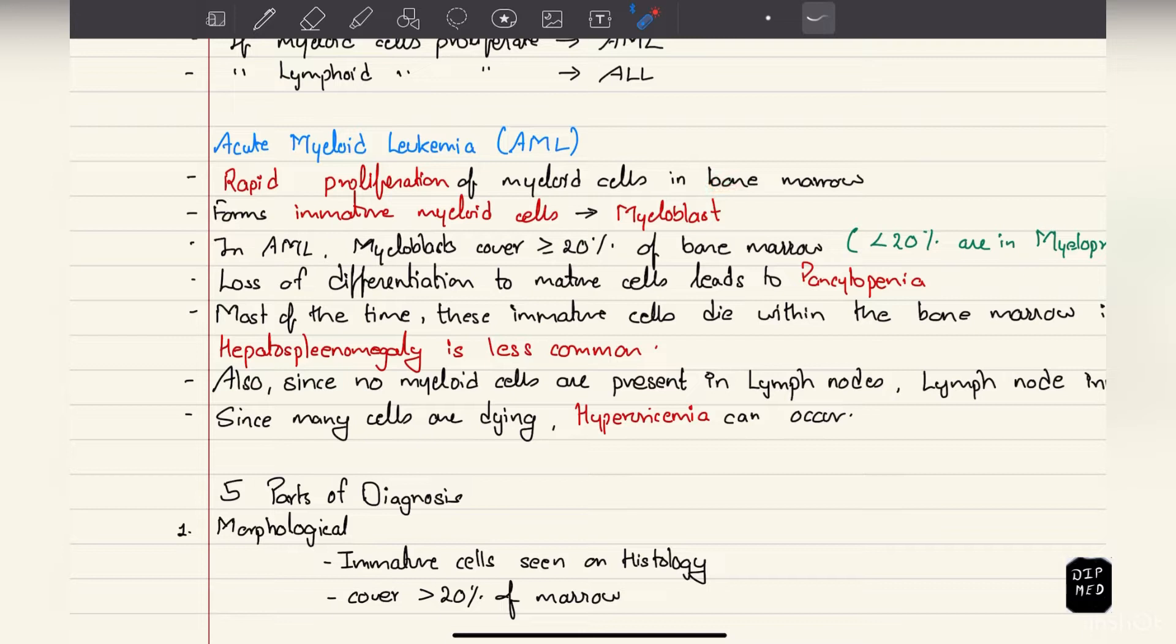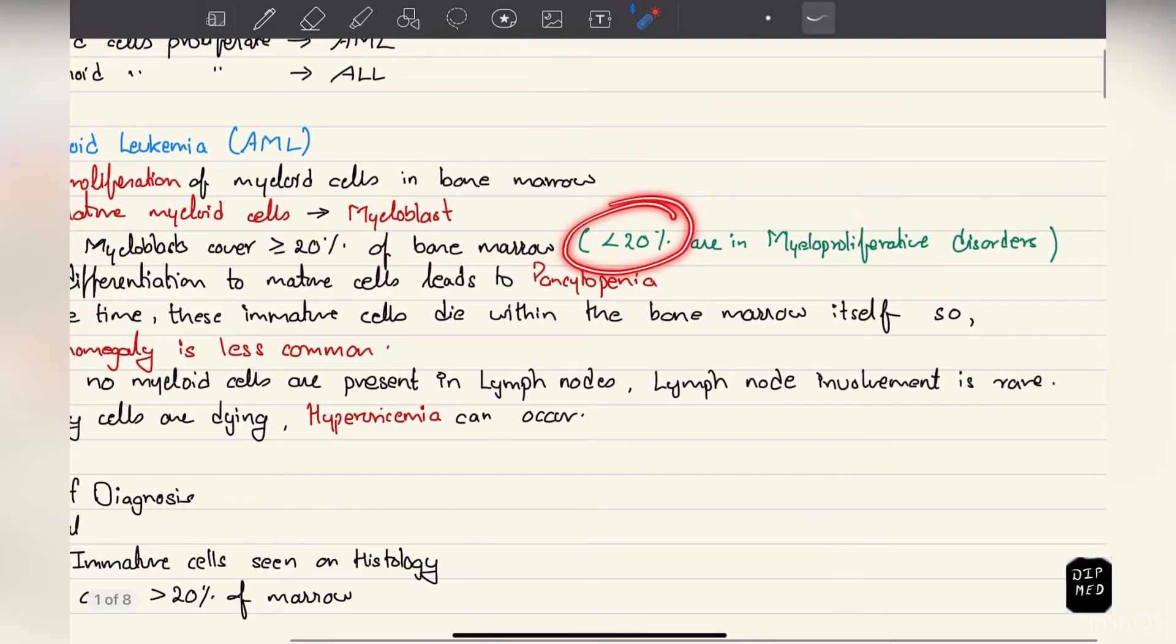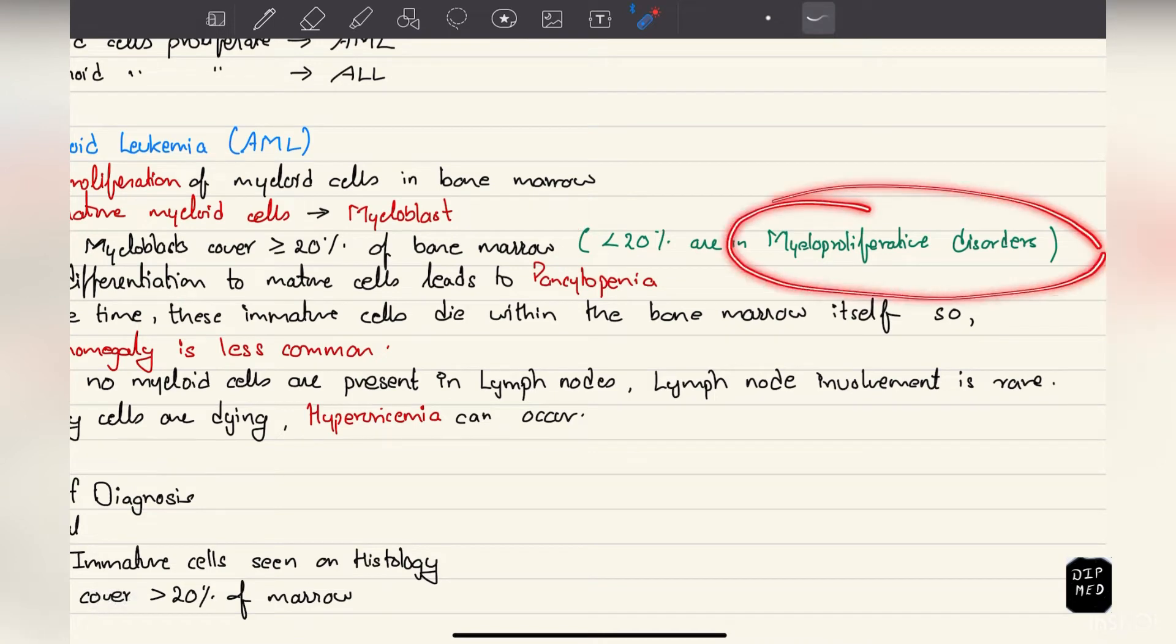Here there is rapid proliferation of myeloid cells in the bone marrow, and these are immature myeloid cells which we call myeloblast. In acute myeloid leukemia these myeloblasts cover more than or equal to 20% of the bone marrow. If it's less than 20% then we suspect myeloproliferative disorders.